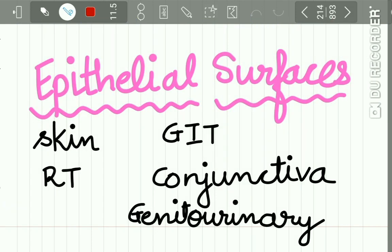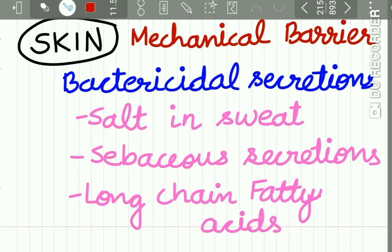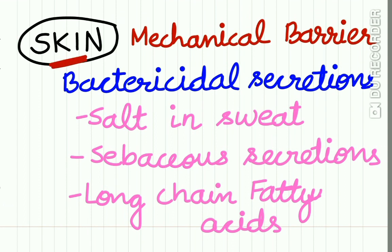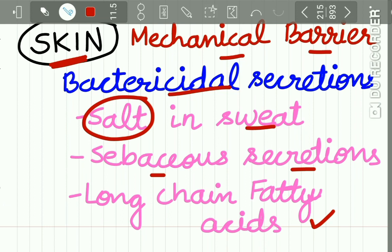The epithelial surfaces provide innate immunity. These epithelial surfaces may be the skin, the epithelium of the respiratory tract, the epithelium of the GI tract, the conjunctiva, or the genitourinary tract epithelium. Talking about the skin, it acts as a mechanical barrier to infectious agents. Certain bactericidal secretions are secreted by the skin — the salt present in sweat is bactericidal, sebaceous gland secretions also contain bactericidal properties, and long chain fatty acids present in skin secretions also act as bactericidal.